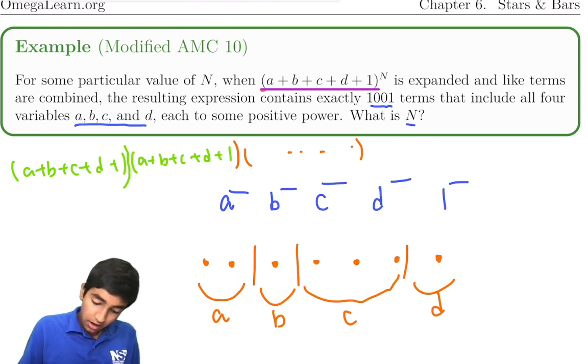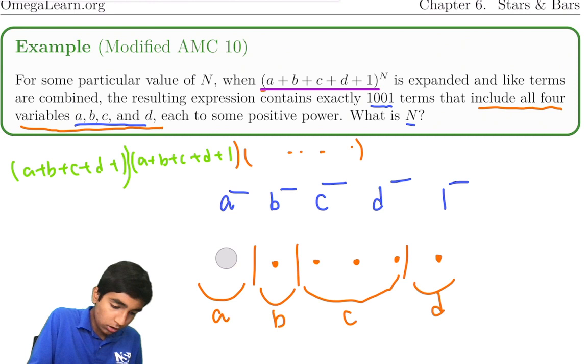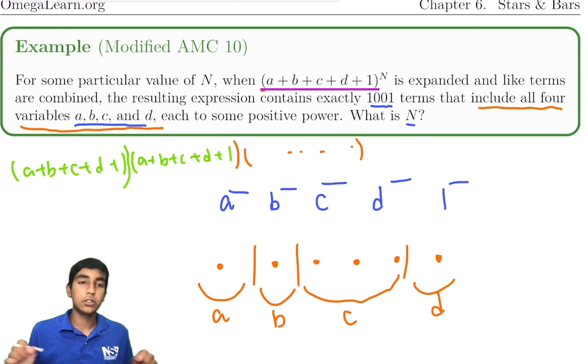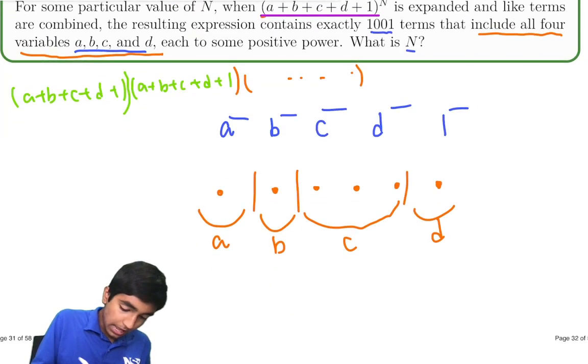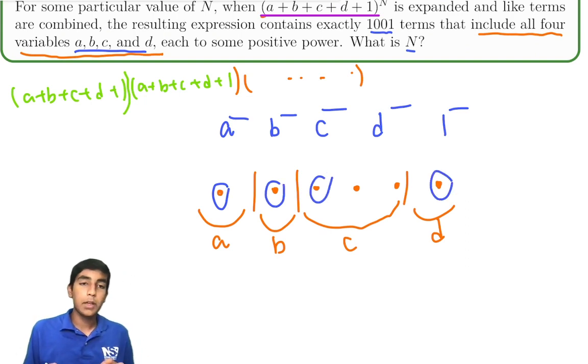But we have a condition here. Terms that include all four variables a, b, c, and d. So what if there's no dots here? Then a equals 0, but that means it won't include the term a because a^0 is just 1. So essentially, what this is saying is that there must be at least one dot in each of these sections.